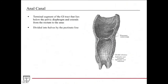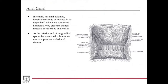The anal canal is the terminal segment of the GI tract. It lies below the pelvic diaphragm and extends from the rectum to the anus. It's divided by the pectinate line, which we'll discuss in subsequent slides. Internally, the anal canal has longitudinal folds of mucosa called anal columns, shown here, stacked right next to each other.